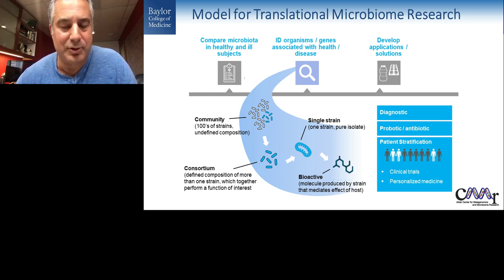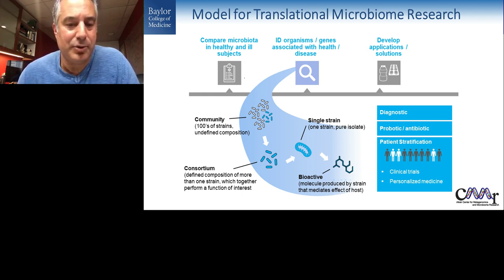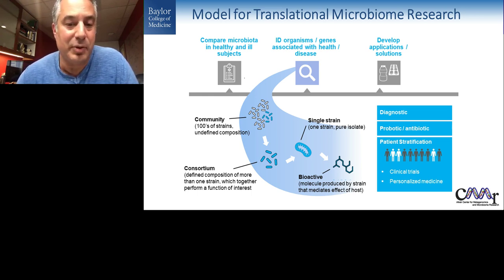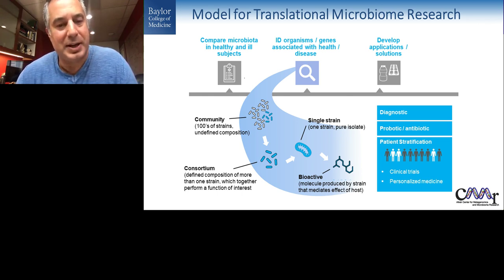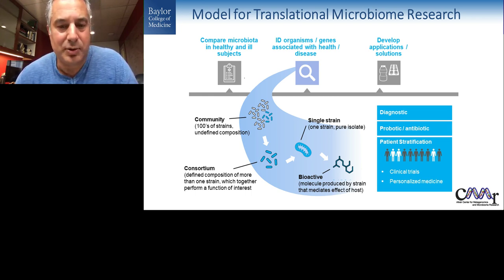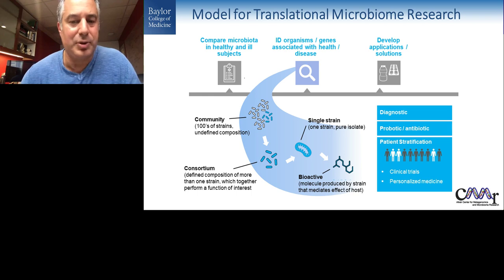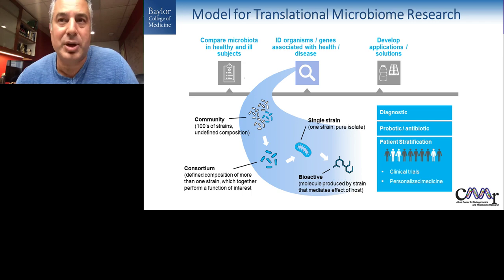This slide captures this at a high level. We approach projects by comparing the microbiota in healthy or ill individuals, identifying communities, consortia, or strains — perhaps even one strain or a metabolite produced by a microbe — and how these associate with health and disease. We then take this back to the laboratory in a model system to test hypotheses and identify potential targets for therapeutic development. These can lead to all sorts of implementations to improve human health, including the stratification of clinical trial patients to better address treatments for certain diseases.